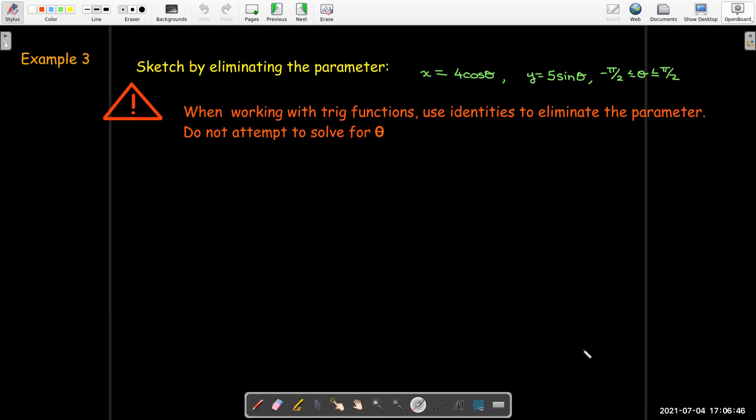So a word of caution. When you're working with the trig functions, look for an identity to help you eliminate the parameter. We did this essentially when we looked at the unit circle. So it's the same idea here. We could try to solve for theta. And theta would be arc cosine of x over 4. And then we have to put that into y equals 5 sine theta. And yes, it is math. So you will get there eventually. But you're going to do a lot of work. And the much, much easier way to do this is to look at the identity cos squared theta plus sine squared theta equals 1.